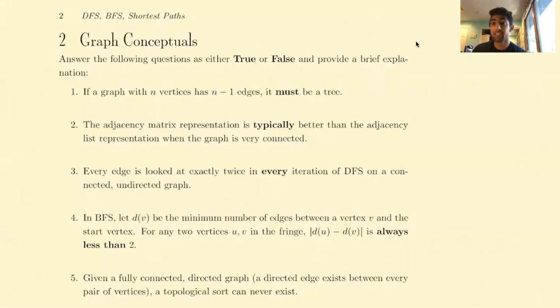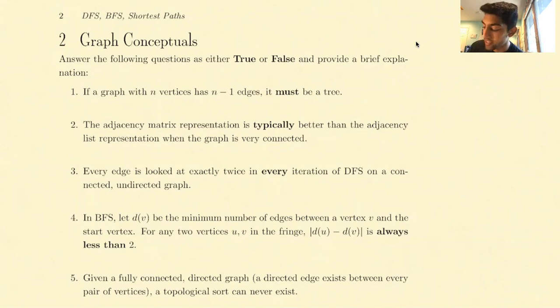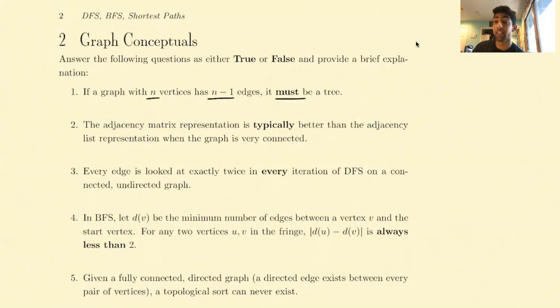Hi everyone. This is going to be a video walkthrough for question 2 on exam prep week 10. The first question states: if a graph has n vertices and n-1 edges, it must be a tree.